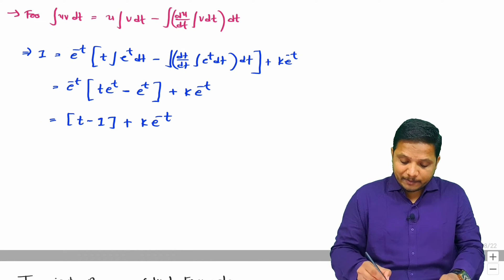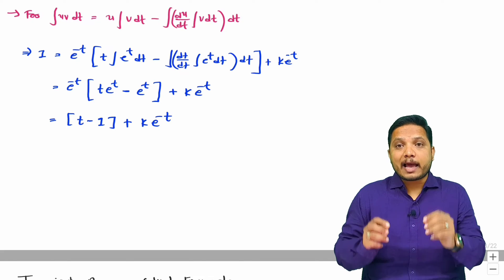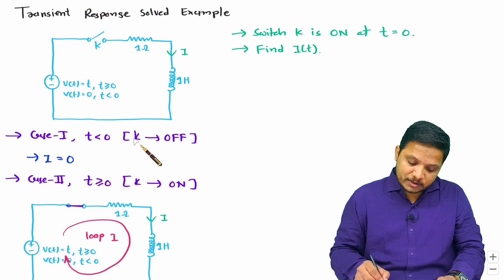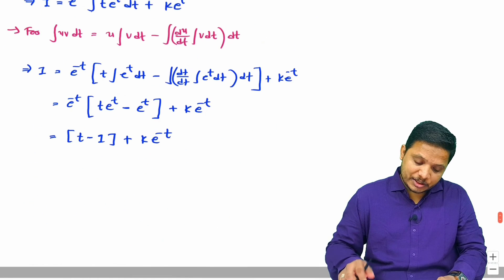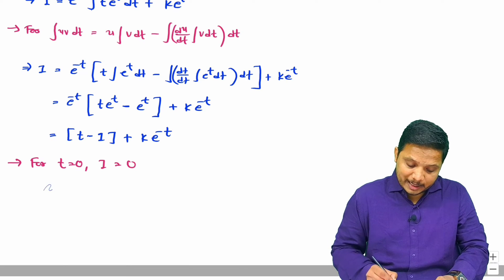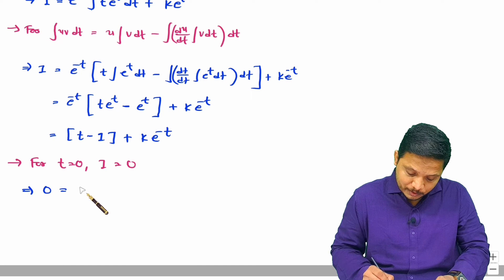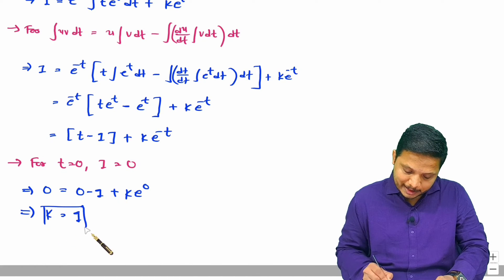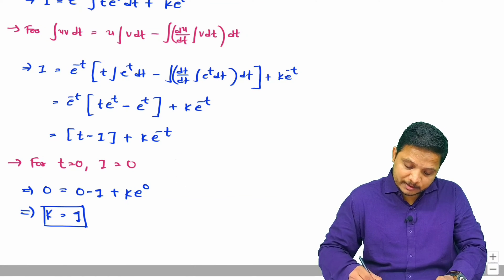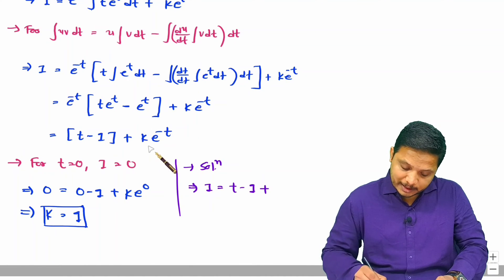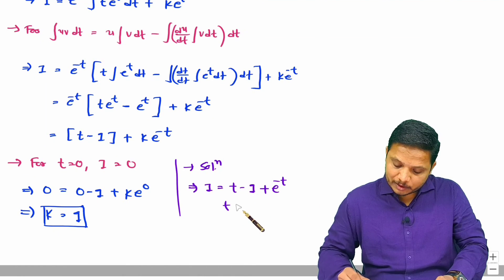We need to find the constant k using the initial conditions. For t less than 0 the switch was off and current was 0, so at t = 0, i = 0. Substituting: 0 = 0 − 1 + k·e^0, which gives k = 1. Therefore the solution is i(t) = t − 1 + e^(−t) for t ≥ 0.